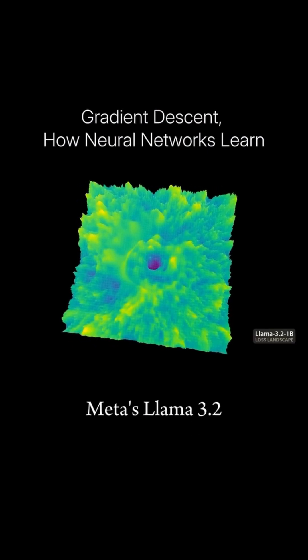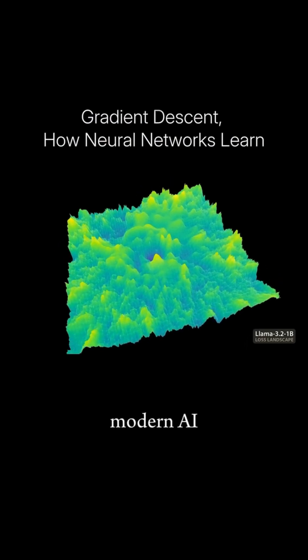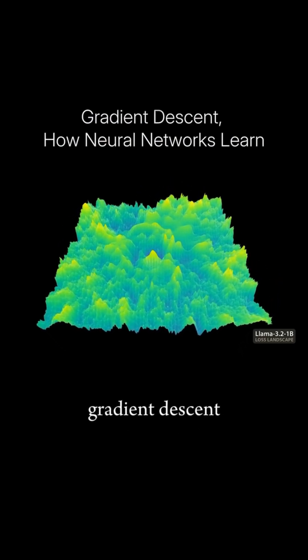This is the loss landscape of Meta's Llama 3.2 large language model. Virtually all modern AI models learn by gradient descent.